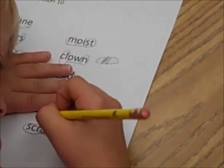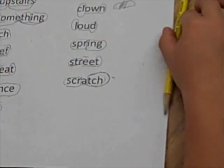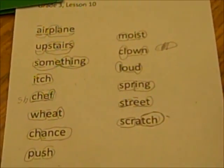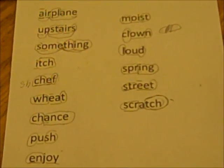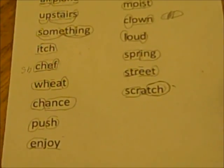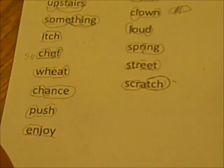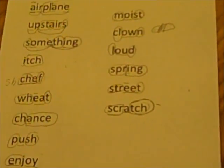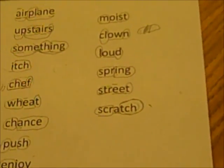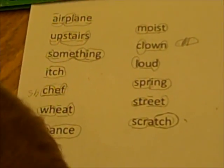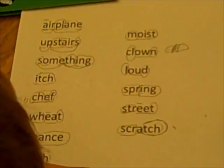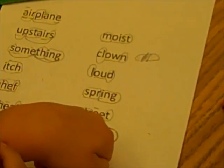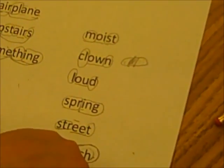All right, nice job. Matthew, let's try and read them. Look carefully at what you've marked. Airplane. Upstairs. Something. Itch. Chef. In. Eat — which vowel says its name? Wheat. Chant. Push. Enjoy. Moist. Clown. Loud. Spring. Street. Scratch. Excellent.